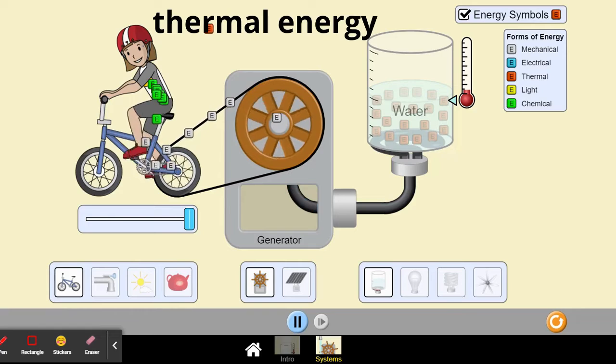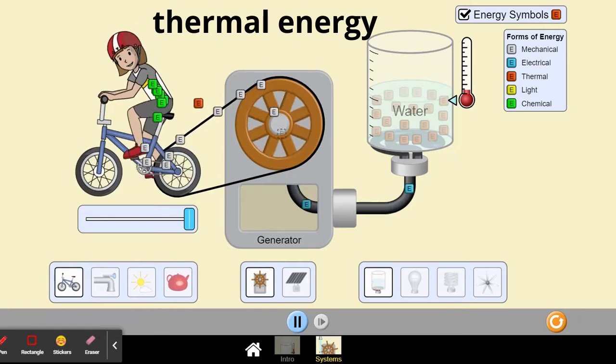And thermal energy in the form of heat as the bicycle rider is getting hotter and hotter from all the movement.